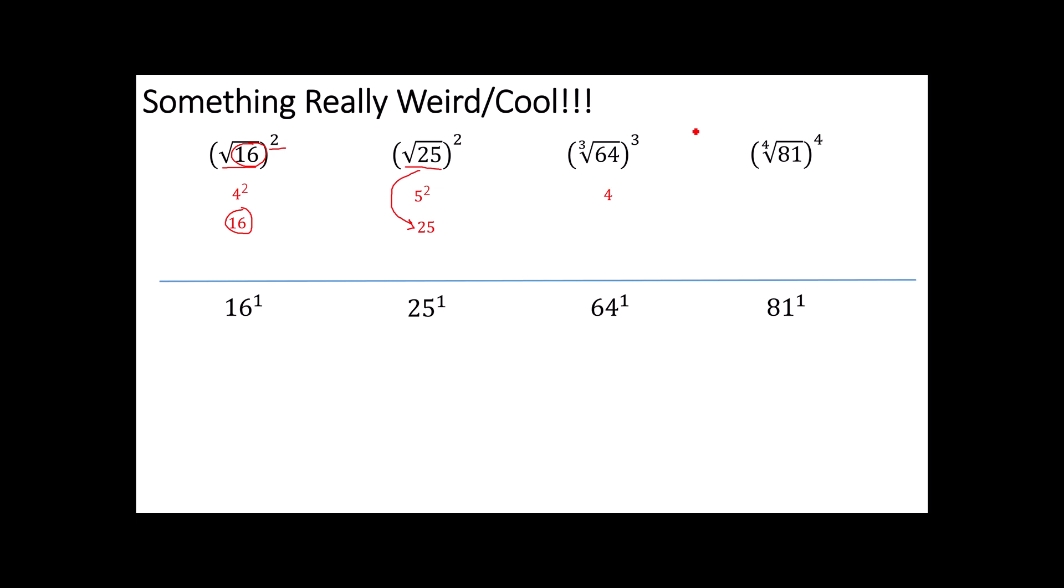Cube root of 64 is 4. 4 cubed is 64. 4th root of 81 is 3. 3 to the 4th is 81. Now, there are some subtle nuances with this rule, but I'm going to get into those in a different unit. For now, suffice it to say that this 4th root and this 4 are undoing each other.